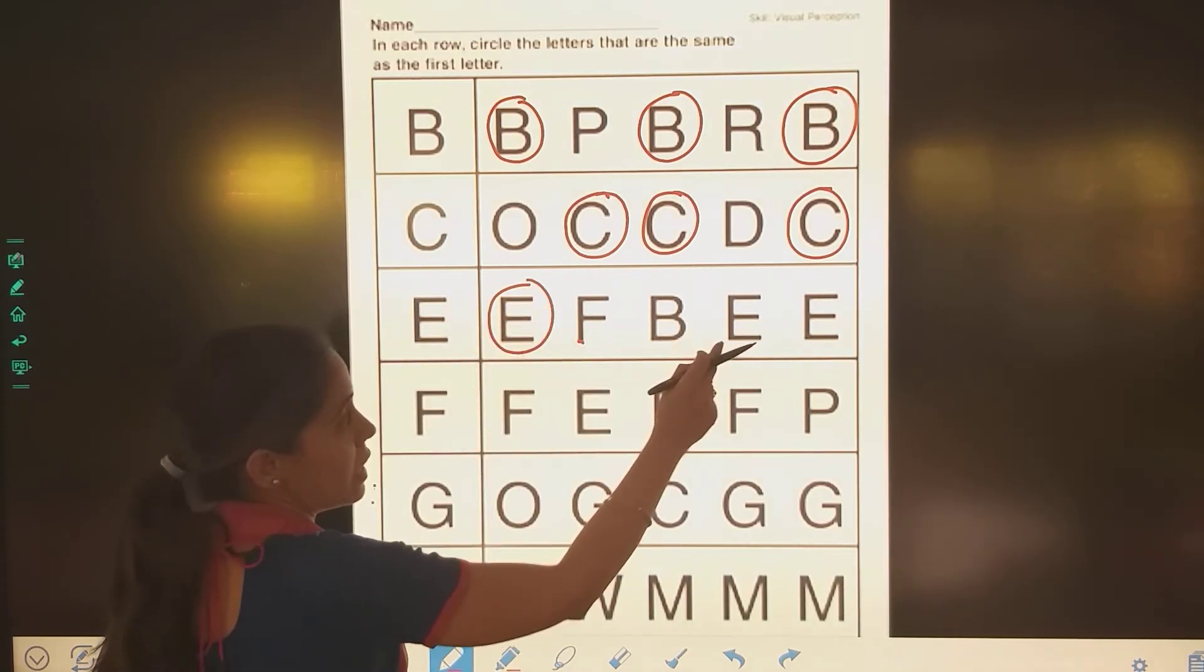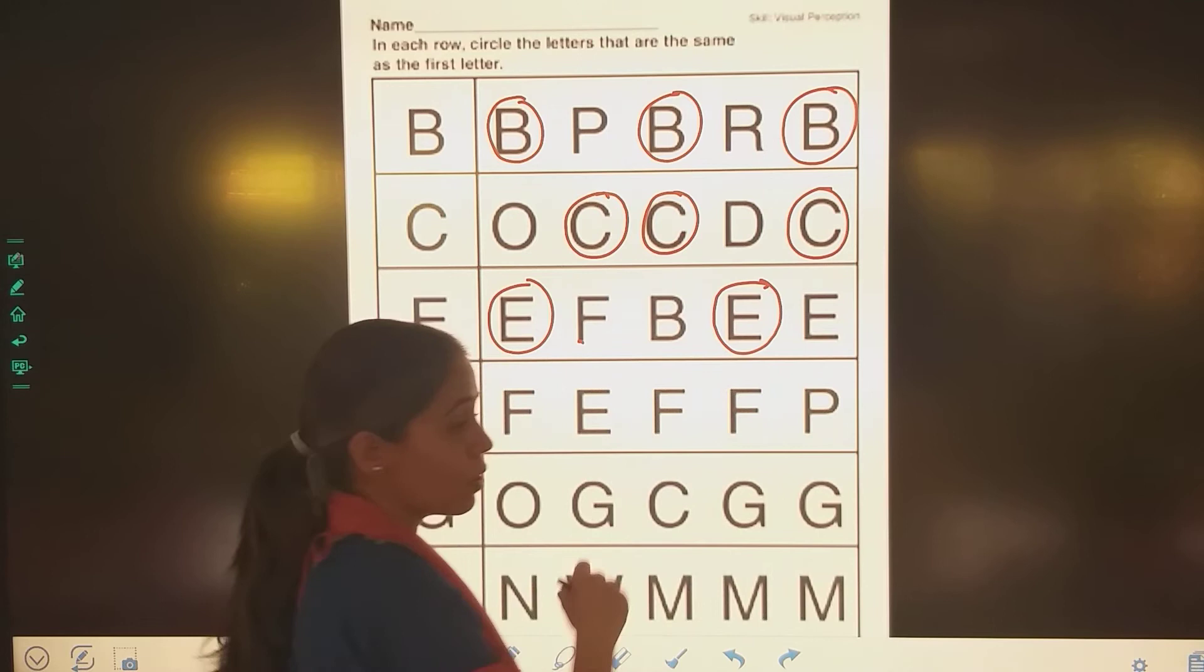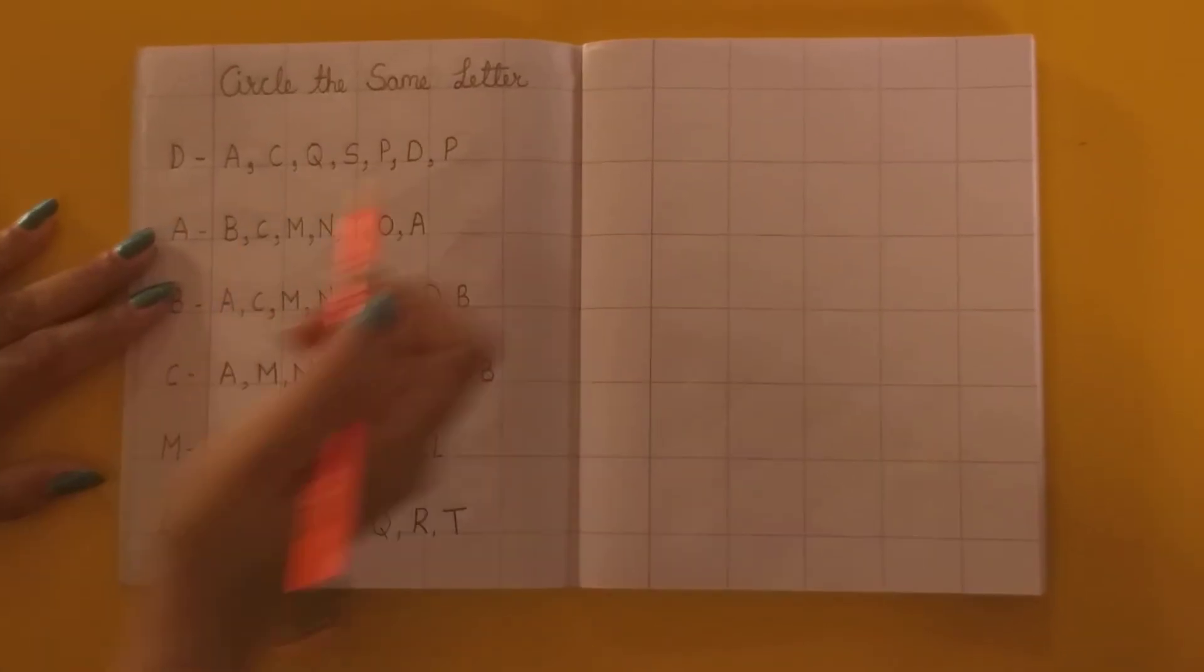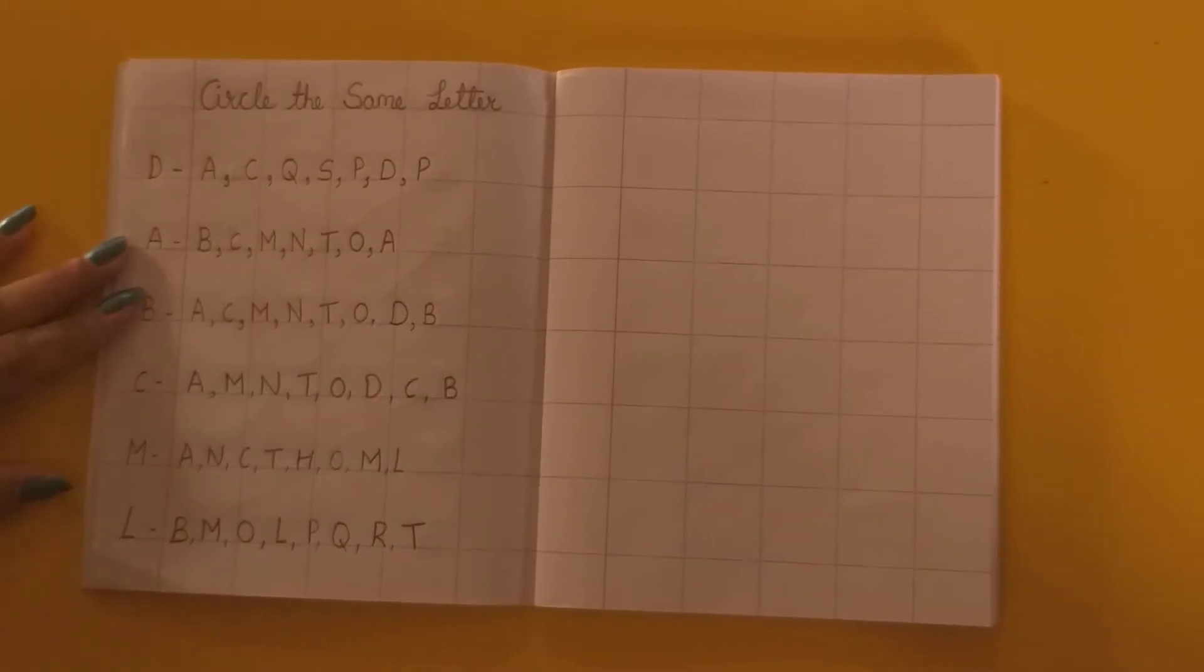Now we are going to practice this in notebook. Come. So circle the same letter. Abhi yaan pe kounsa letter hai bachcha?